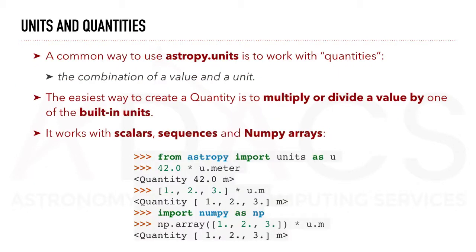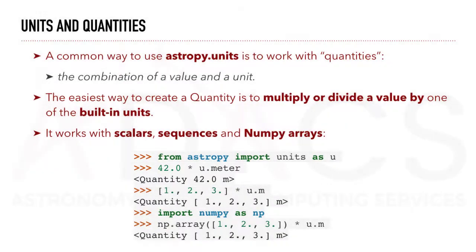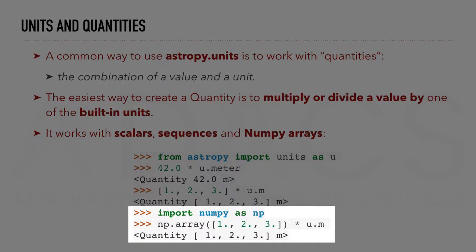As is common in physics, a common way to use AstroPy.units is to work with quantities, the combination of a value and a unit. The easiest way to create a quantity is to multiply or divide a value by one of the built-in units. It works with scalars, sequences, and numpy arrays, as shown below.